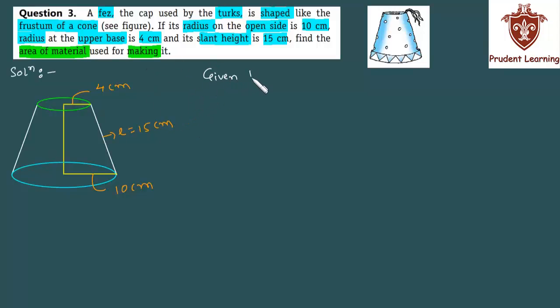Here we are given that the slant height of the frustum is 15 cm, the radius of the open side is 10 cm (let us call it R1), and the radius of the upper base is 4 cm (let us call it R2). We are required to find the area of the material used for making the cap.